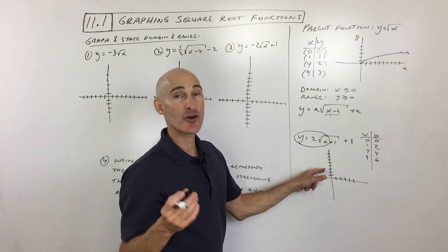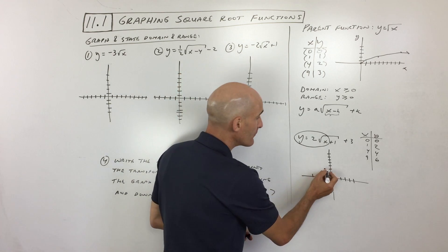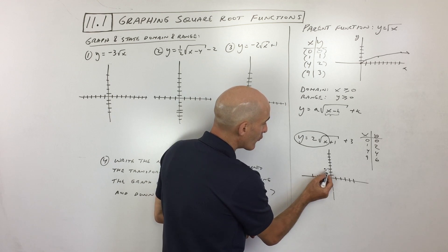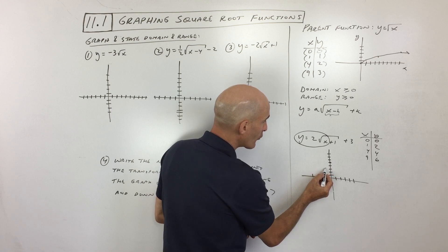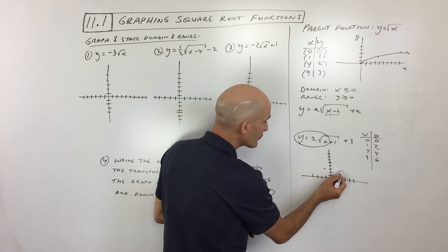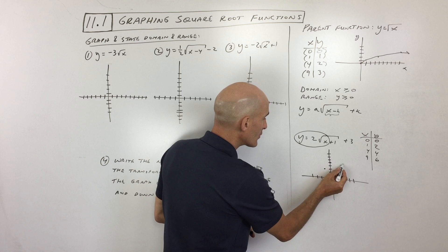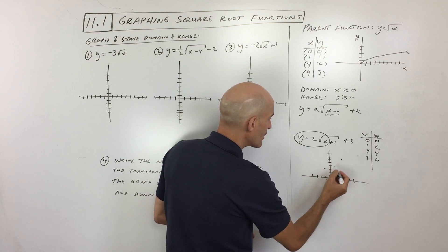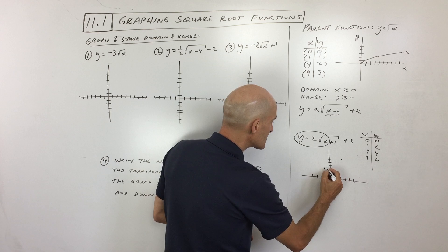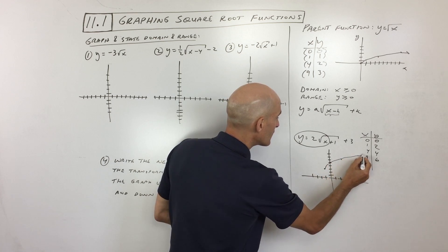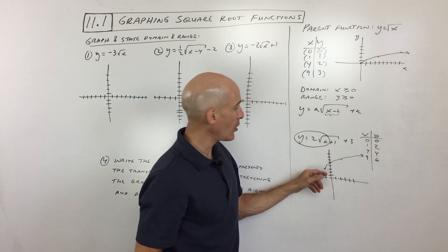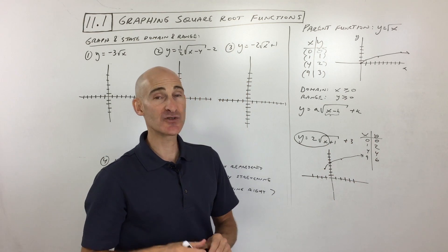From the new starting point, go right one, up two; then right four, up four; then right nine, up six somewhere over here. You can see the graph looks like that — it curves, going up slower and slower. That's your graph.